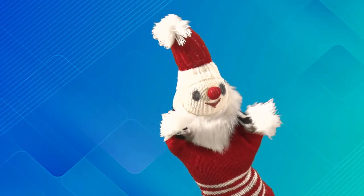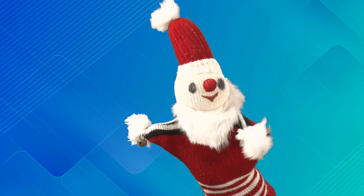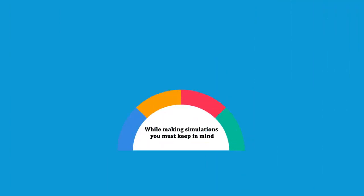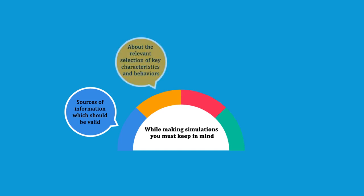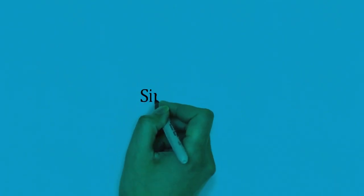Simulation is a near-possible imitation of reality. It shows the operation of a process or system that represents its working over a period of time. While making simulations, certain things must be kept in mind: first, the authenticity of the source — the source of information should be valid. Also important are the relevant key characteristics you want to select and show in a simulation. It also uses simplifying approximations and assumptions, and the fidelity and validity of simulation outcomes are very important.